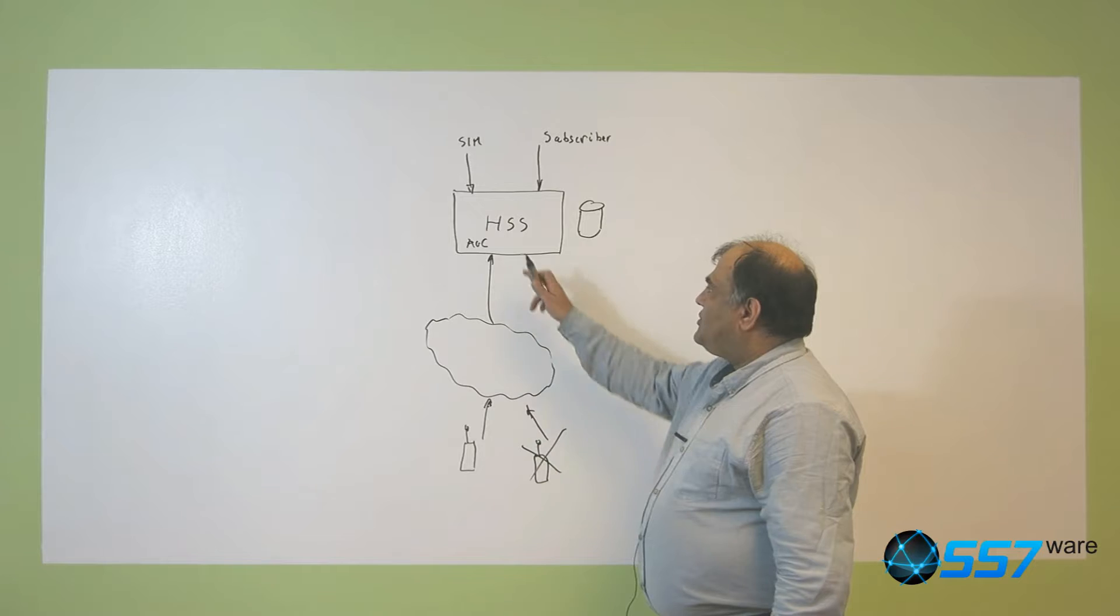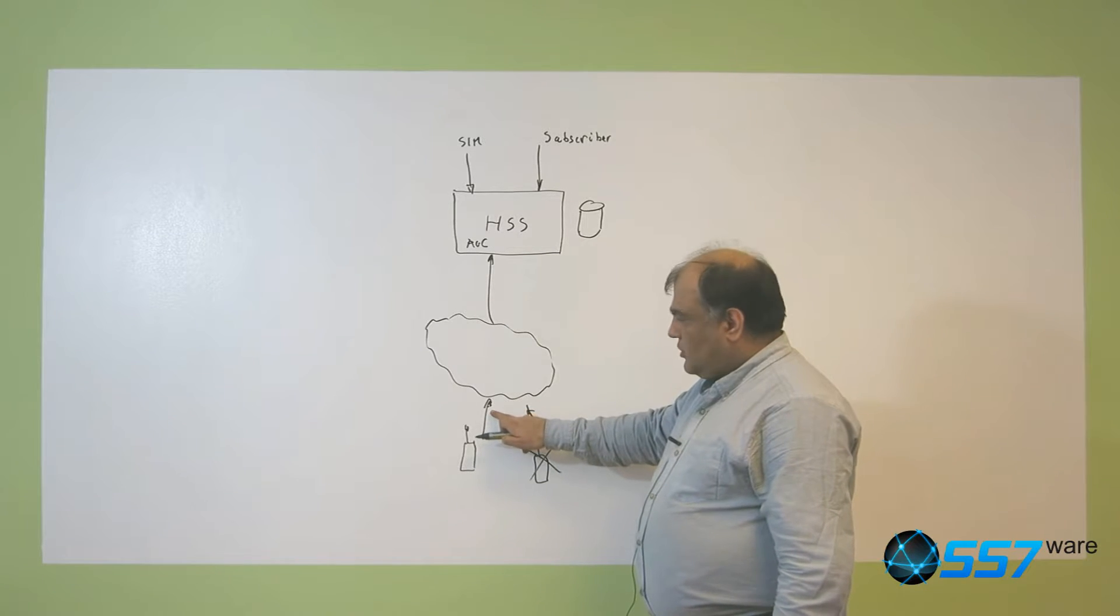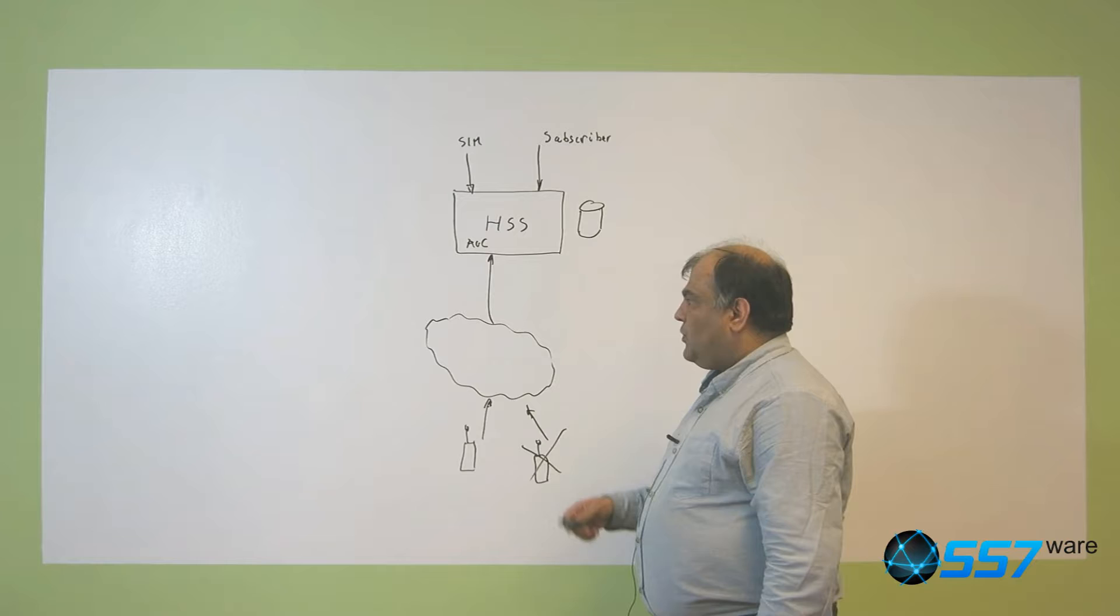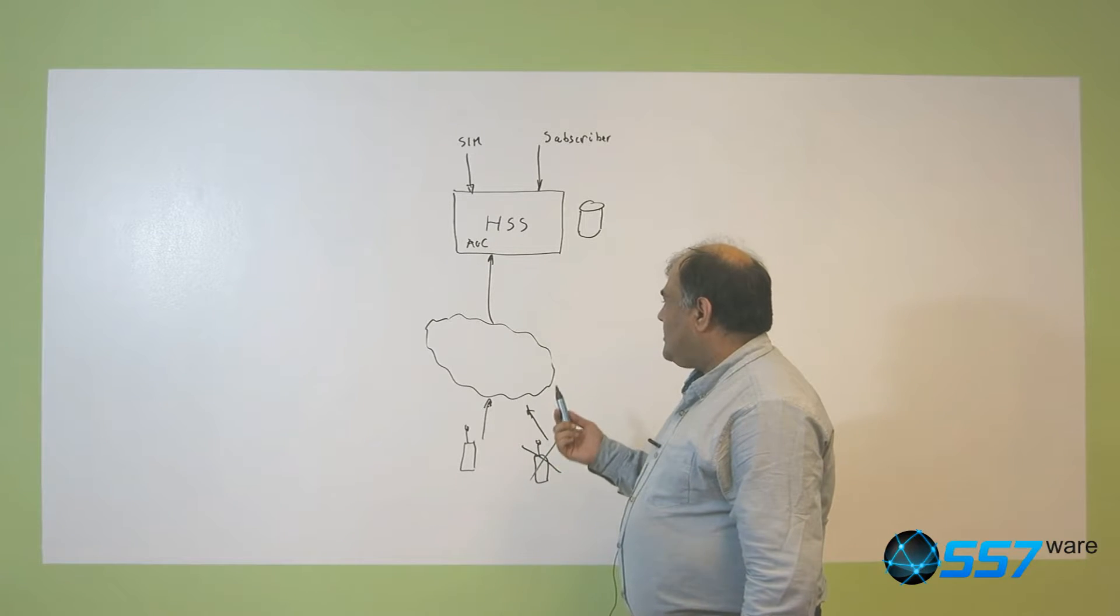And also the HSS would remember what's the serving network for this subscriber so that whenever it is required it is accessible.